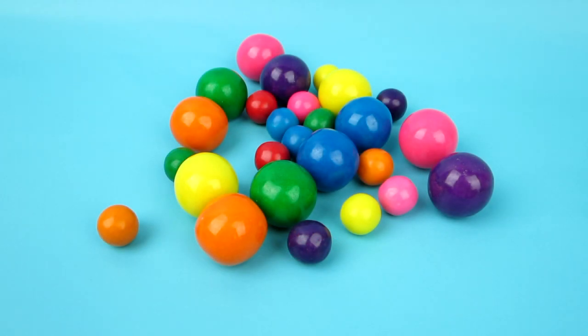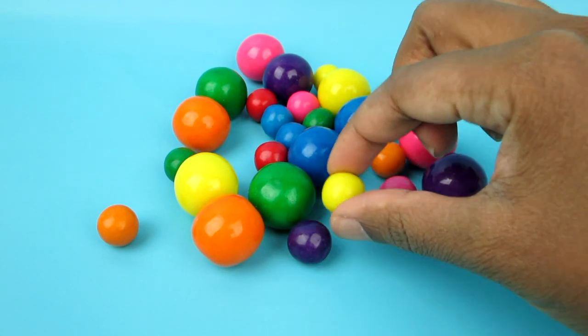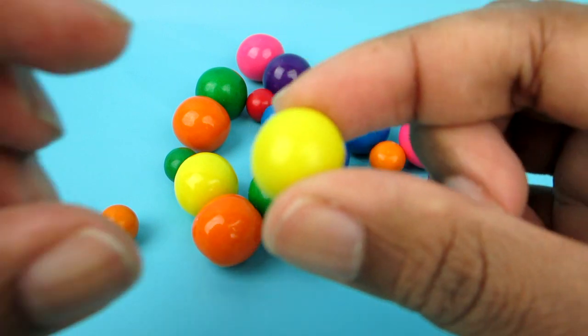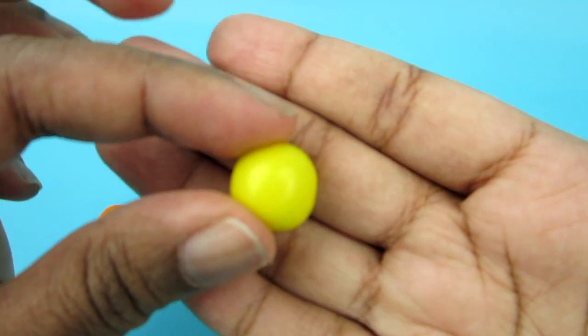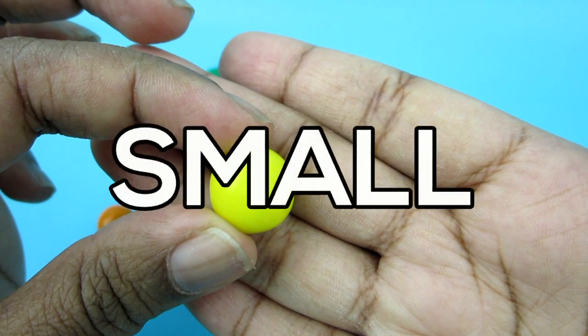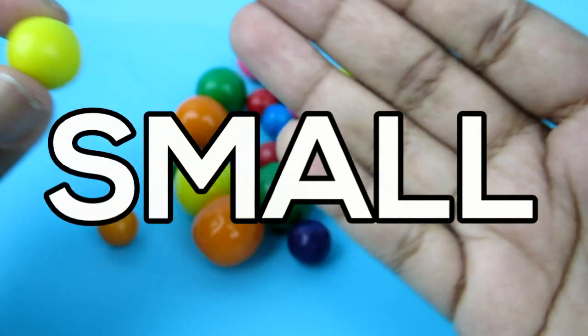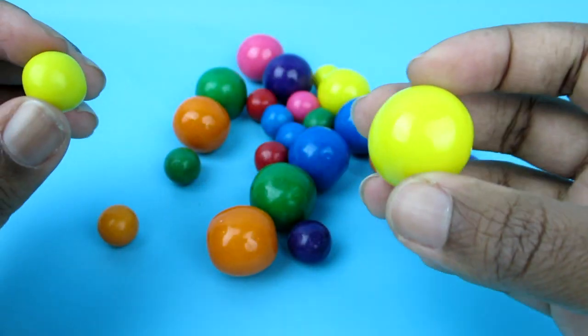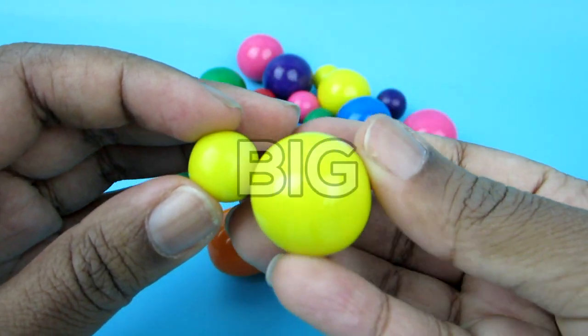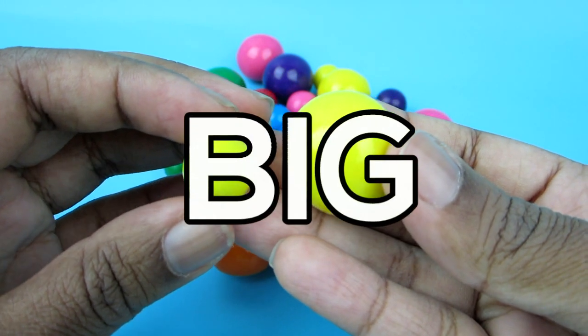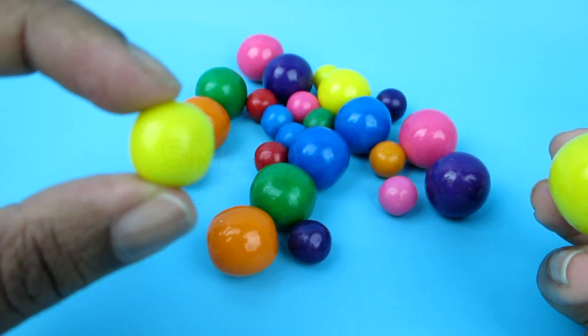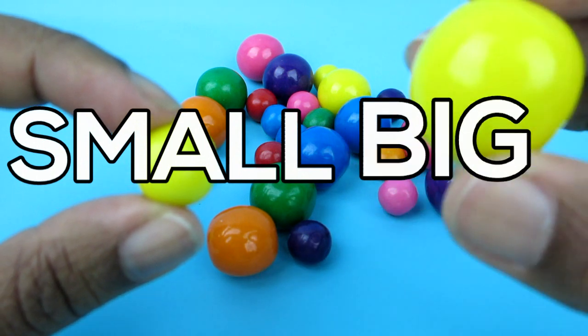Alright! Okay, first let's talk about the sizes. Now, we have two different sizes. Let's take this for example. This gumball is small in size. This gumball is big. So we have small and big.